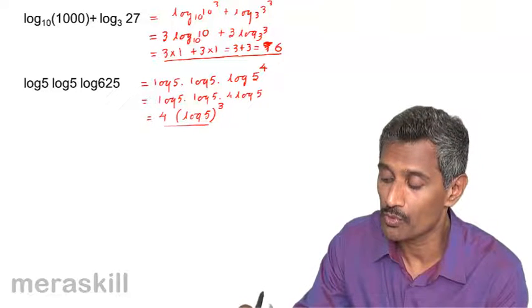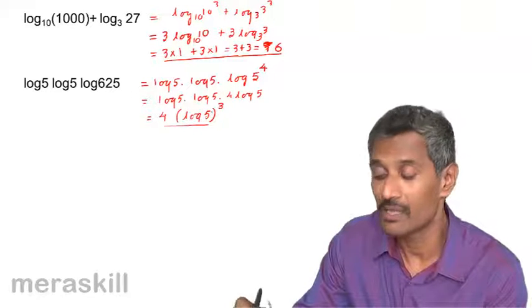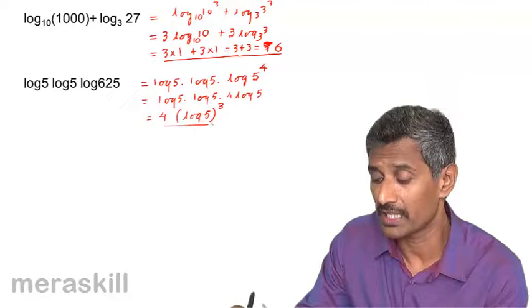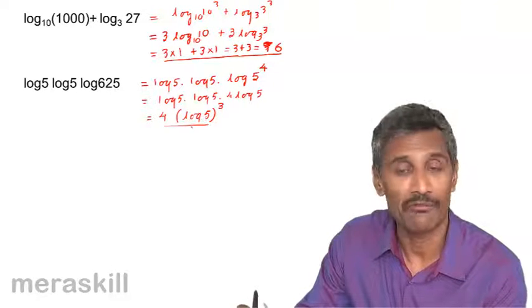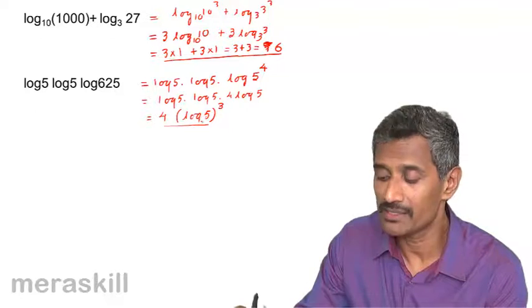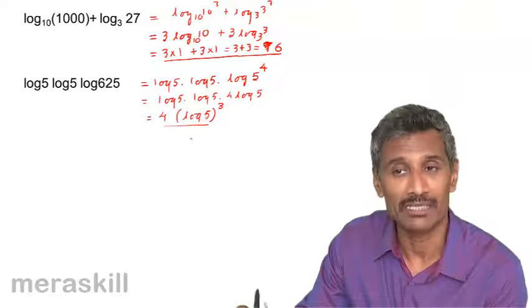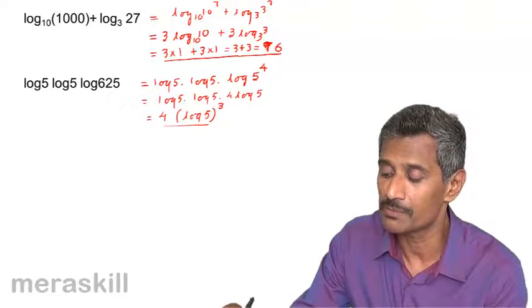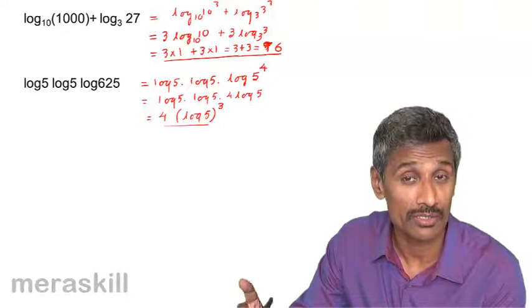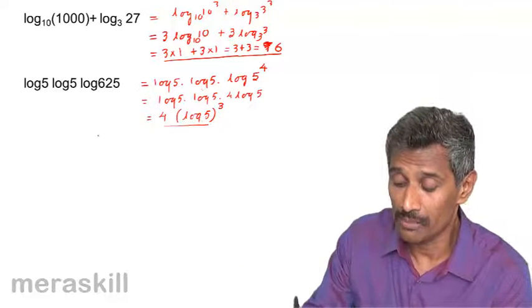For simplification, we need to know the values. Here the base has not been mentioned, so we take the base as 10. But ultimately, using this particular rule, we need to remember one thing - we need to be alert.